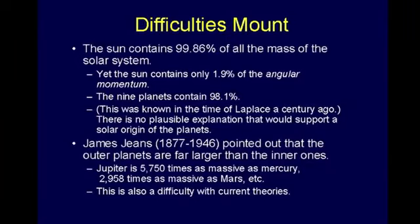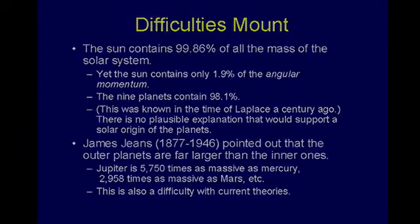There are some problems with the theory that the planets came out of the Sun. It turns out that the Sun contains 99.86% of all the mass of the solar system. We see these little models of the Sun and the planets, and we fail to appreciate the size of the Sun in contrast to all the planets put together. All the planets put together are fifteen hundredths of a percent of the mass of the solar system — not our whole galaxy, just our Sun and the planets that go around it.